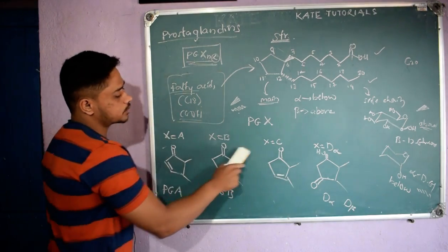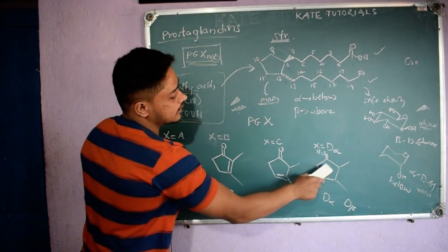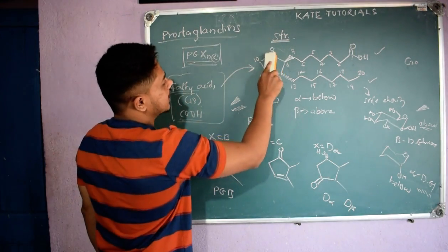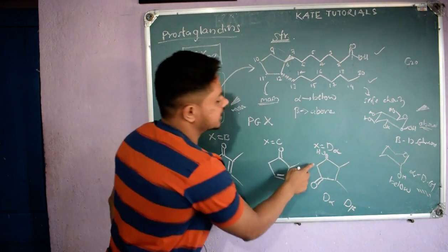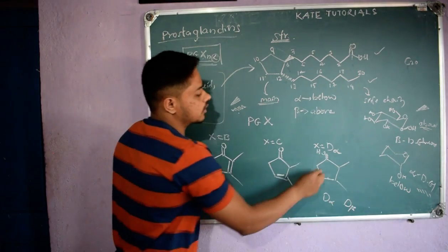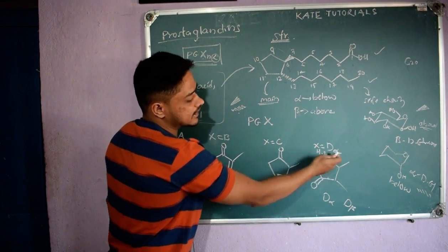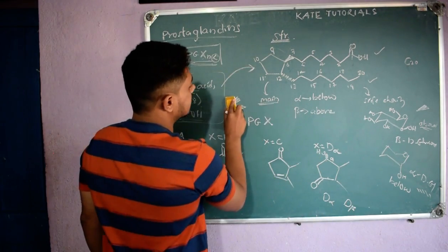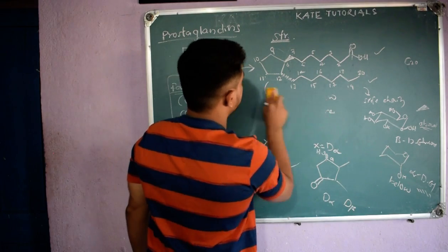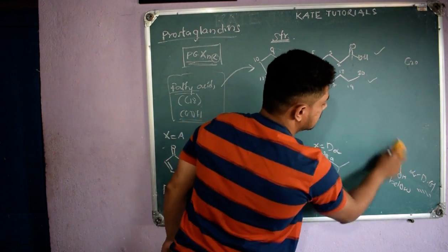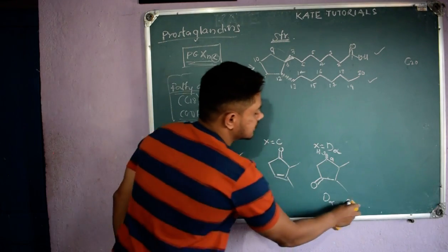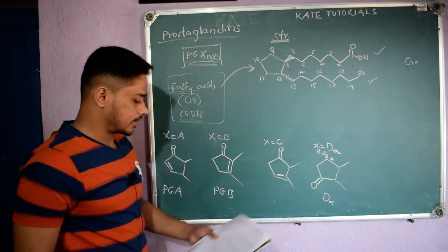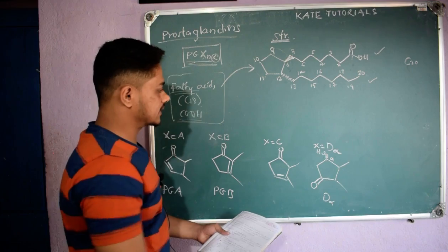So for PGD, the pi bond was on the left and now the ketone group comes at C11, while the C9 carbon has stereochemistry. If the substituent at C9 is below the plane, it is alpha — hence PGD alpha. This is how the alpha notation is used in naming PGD.